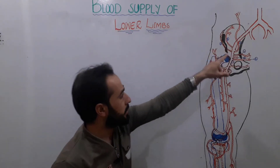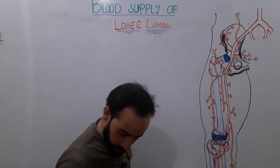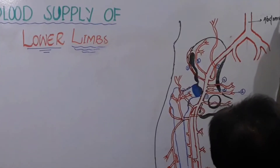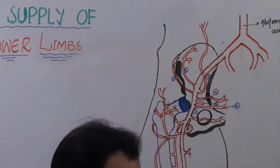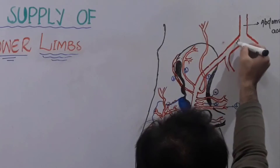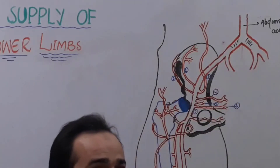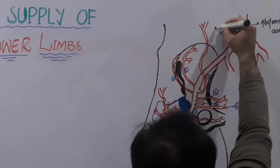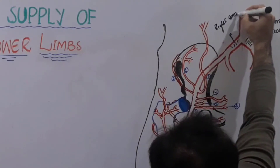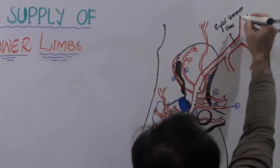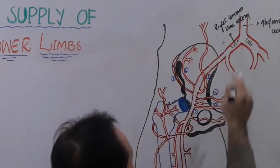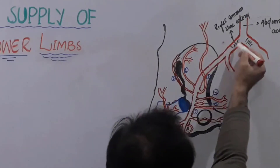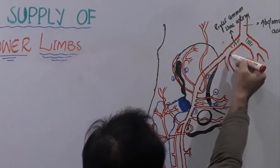Let me remind you about this diagram. This is the abdominal aorta. This abdominal aorta bifurcates into a right and a left common iliac artery — I have discussed this before. This is our right common iliac artery and this is our left common iliac artery. Now this common iliac artery, either right or left, goes forward and gives off two branches.